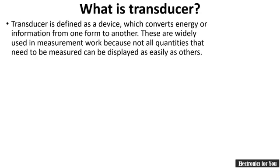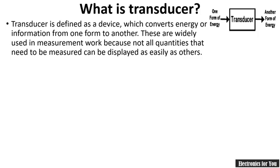A transducer is a device which converts one form of energy or information into another form. The input to the transducer is one form of energy and it will produce another form of energy as the output. These transducers are widely used in measurement because not all quantities that need to be measured can be displayed as easily as others.